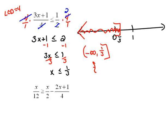Written as set builder it would be the set of all x's such that x is less than or equal to 1 third.